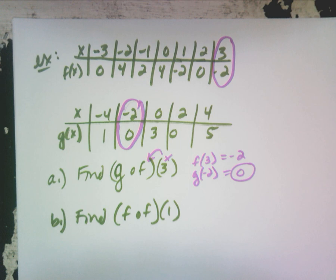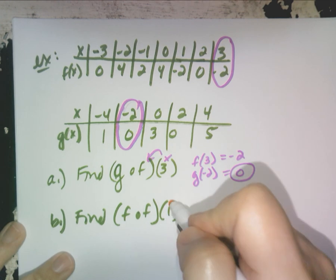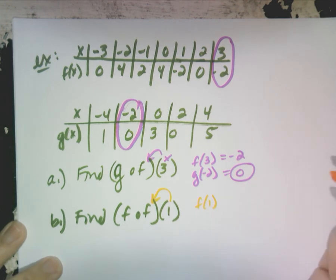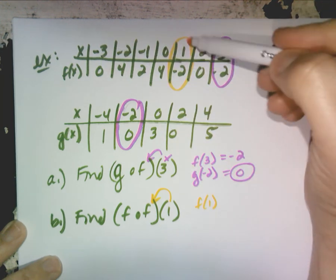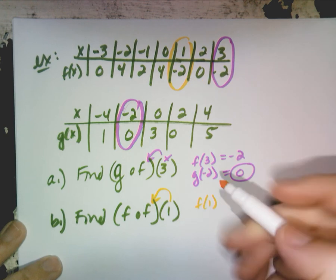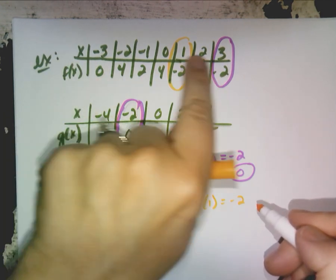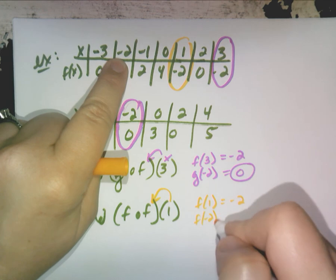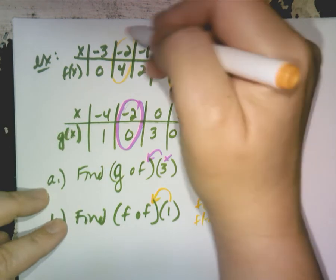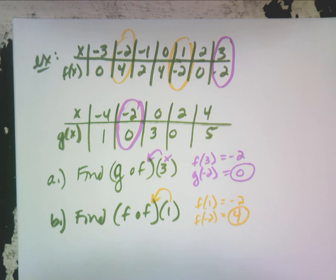Now find fof(1). Do you have to go to the g table at all? No. Find f(1): x is 1, f(1) = −2. Now take that −2 and go back to the f table and find f(−2). The answer is 4. Did that make sense? It's really cool once you see it.